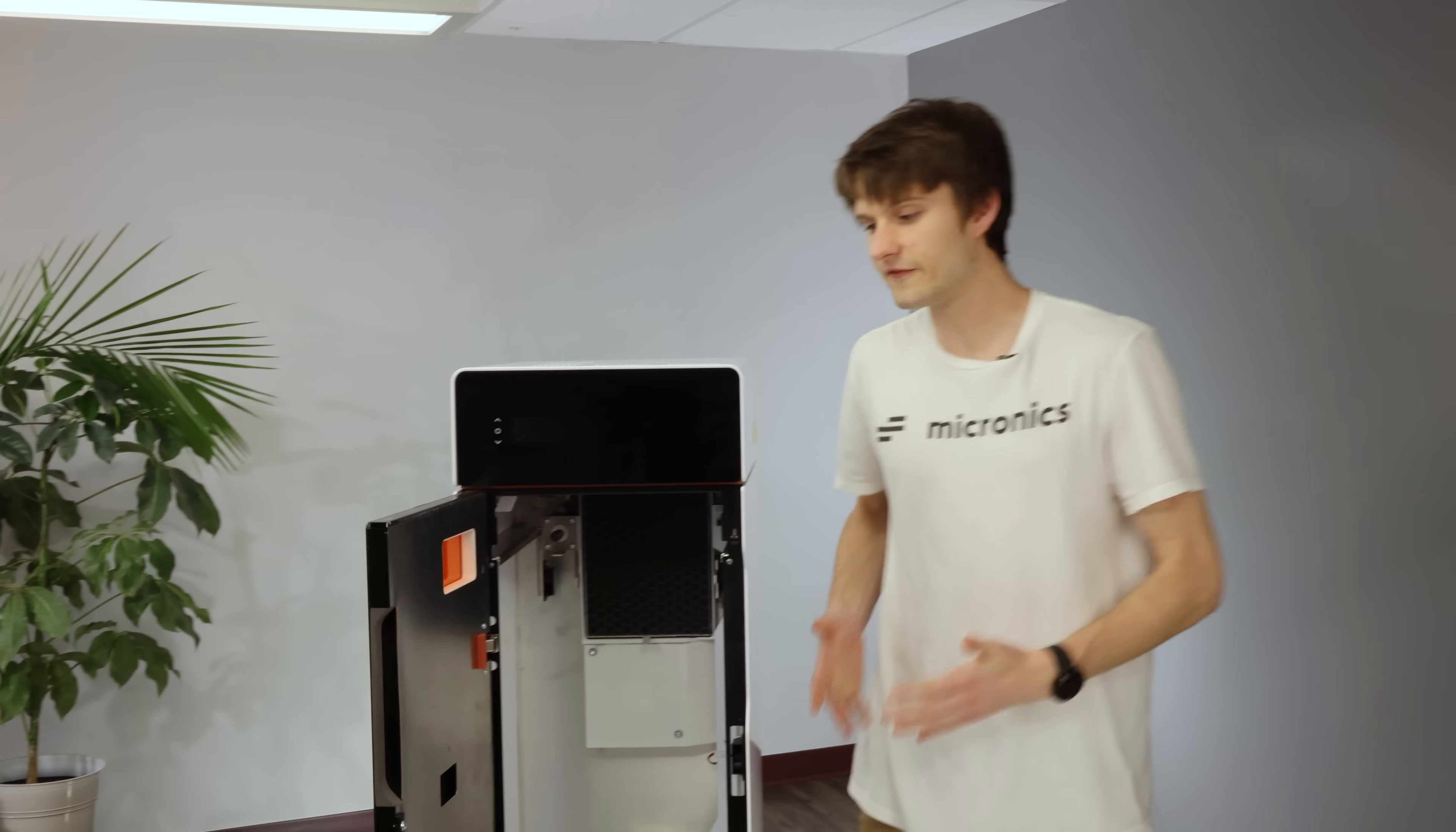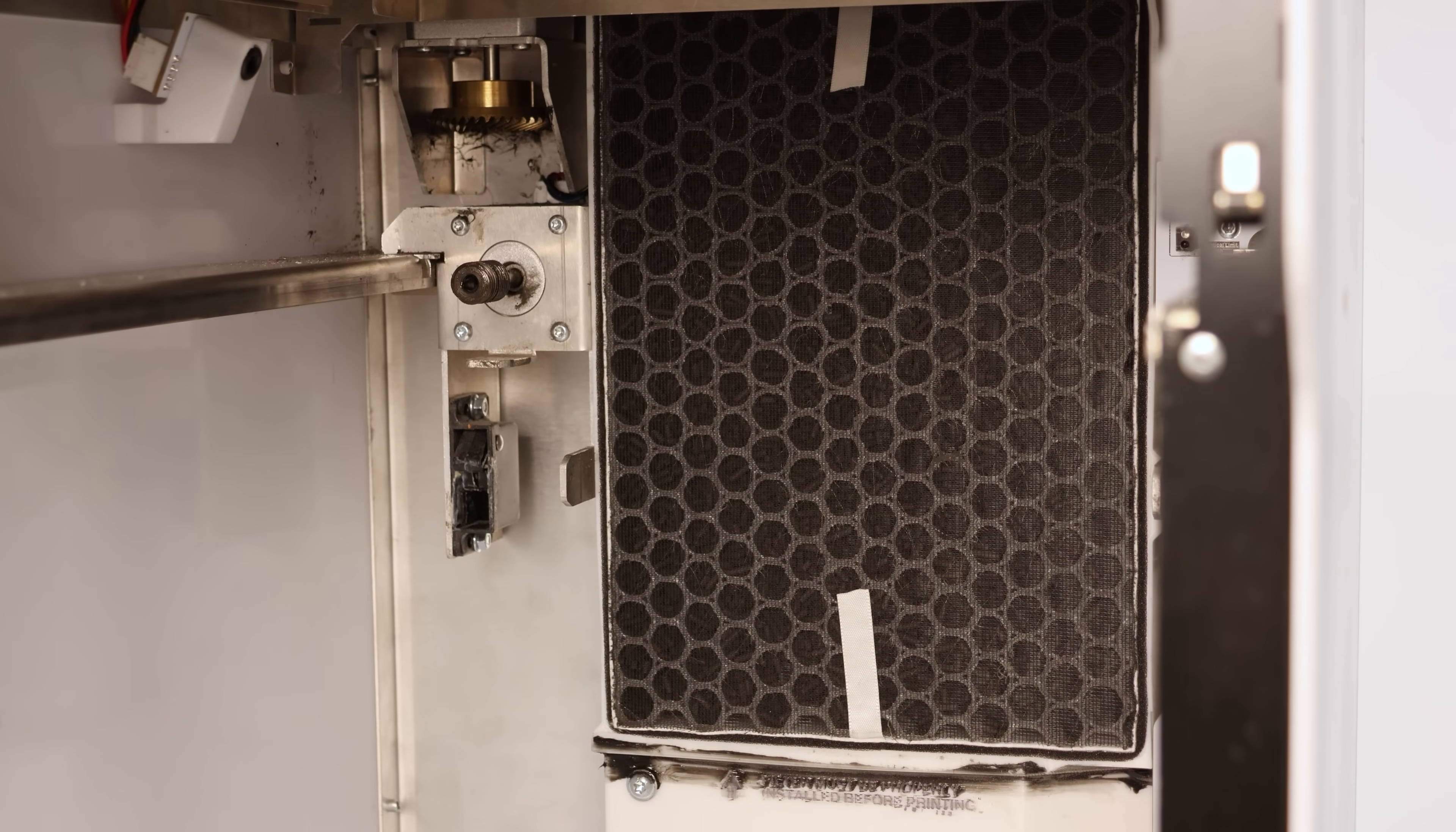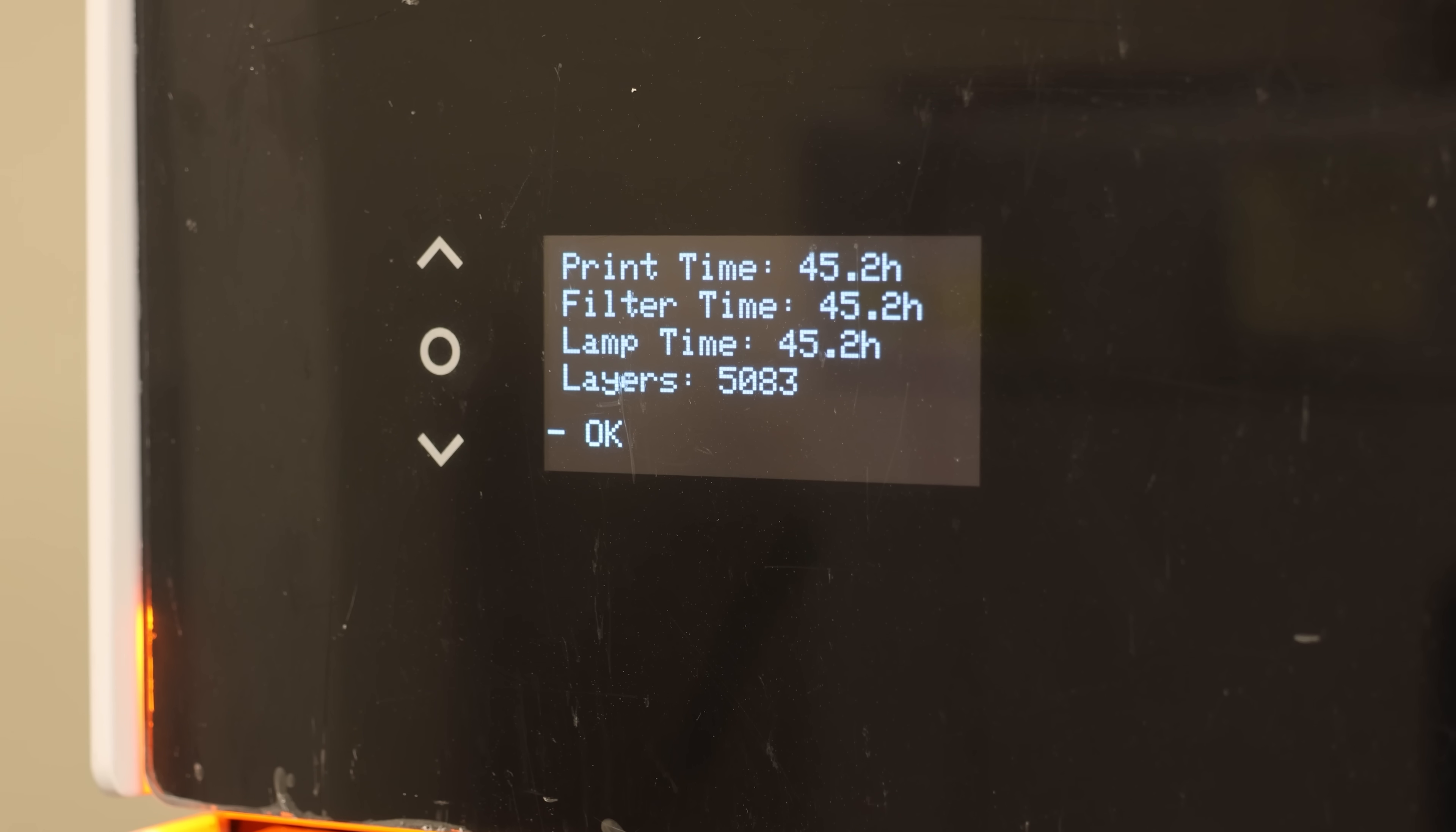First, we'll look at the air filter and make sure it's fully seated. The filter is a two-stage carbon HEPA filter designed to capture contaminants from the laser sintering process. The filter needs to be replaced every 300 hours, but don't worry, the printer will remind you.